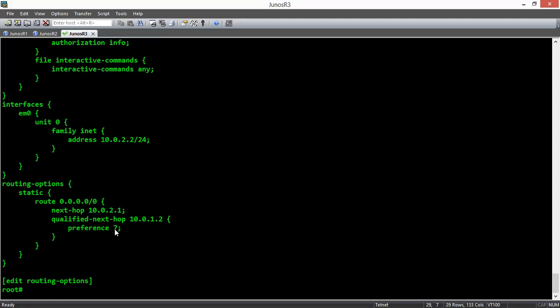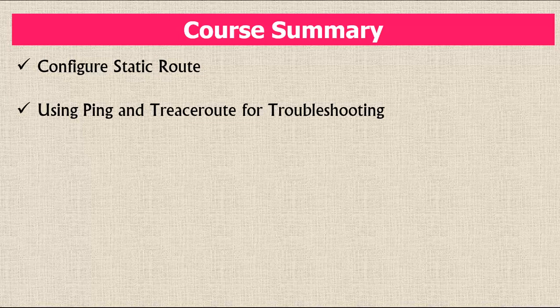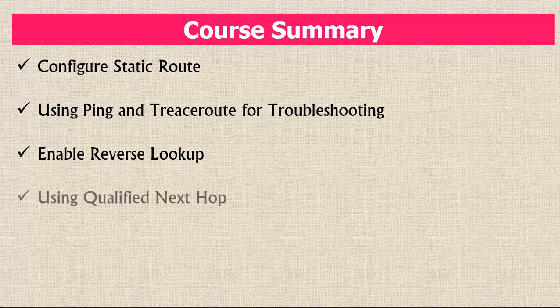Our today's mission is complete and we're ready to wrap it up. In today's lecture, first we learned how to configure static routes in Edit Routing Options configuration mode. Next, we learned how to use ping and traceroute for troubleshooting. After that, we learned how to enable reverse lookup with the resolve command to have non-directly connected routers as the next hop. And finally, we learned how to configure qualified next hop, or floating static routes. Thank you for watching and I hope this lecture helps you improve your knowledge. See you in the next lectures.